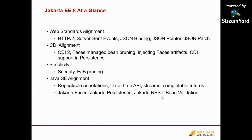A lot of people don't know what's in Jakarta EE8 or Java EE8. These features can be categorized in several buckets. Web standards alignment is about aligning with non-Java standards, mostly from the W3C — things like HTTP2, server-sent events, HTML5, and JSON. JSON is actually a W3C specification. All of these technologies have undergone rapid evolution and are continuing to do that.